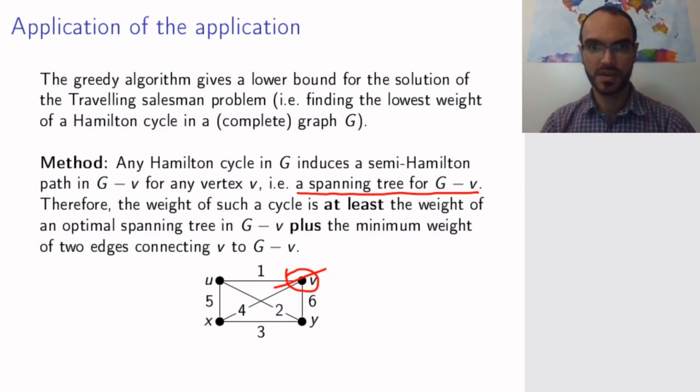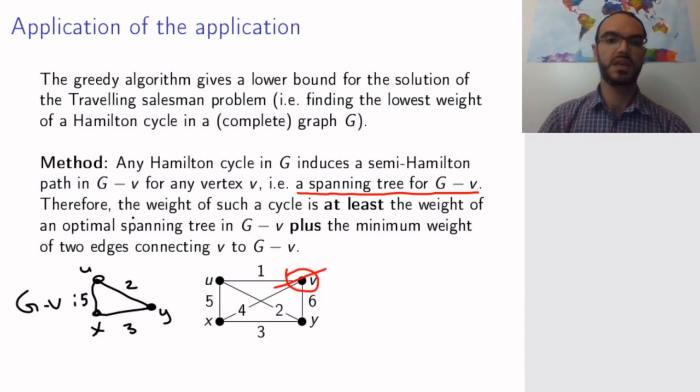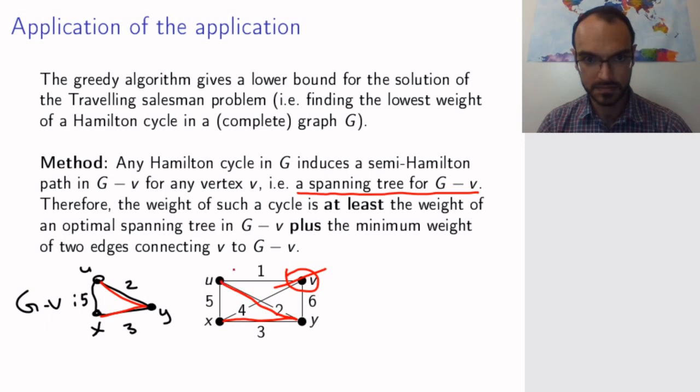Let's see how this works here. If this is my G, then G minus V will be this graph, U, X, Y, with the weights 3, 5, and 2. An optimal spanning tree here, I don't really need the algorithm, it's obvious just by looking that choosing these edges is an optimal spanning tree. So this would be these edges. That's the spanning tree. And now I connect these in the cheapest possible way to my original V. So I have this one here and this four here. And in this case, I got a Hamilton cycle in the big graph.